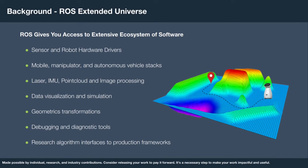If you're unfamiliar with ROS, it gives you access to a large variety of software built specifically for robotics. This includes sensor and robot drivers so you can get started quickly with new hardware in your lab. It includes software stacks for autonomous navigation, manipulation, and autonomous driving. It includes processing pipelines for common sensors like LiDARs, IMUs, point cloud generators, and cameras. It includes data visualization tools like RViz, simulation through Gazebo and Ignition, geometric transformation libraries for time series data, debugging and diagnostic tools, and interfaces for research algorithms into production frameworks.